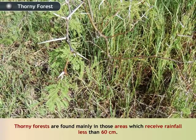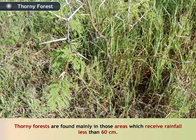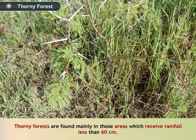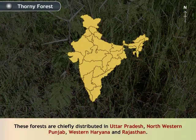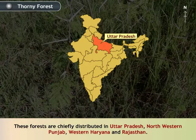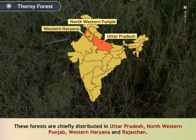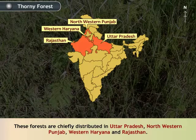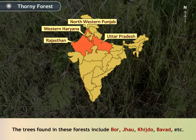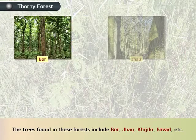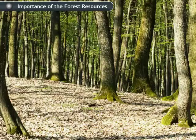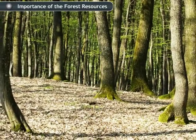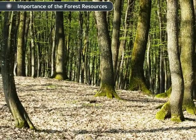Thorny forests are found mainly in those areas which receive rainfall less than 60 cm. These forests are chiefly distributed in Uttar Pradesh, North Western Punjab, Western Haryana and Rajasthan. The trees found in these forests include Bor, Jhor, Khejdo, Babool, etc. The forest resources serve a number of important purposes.